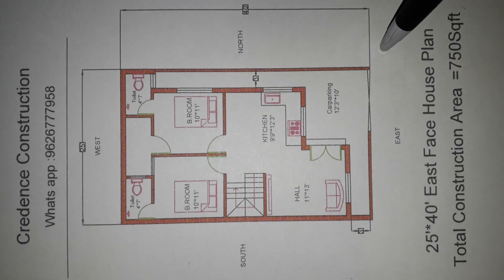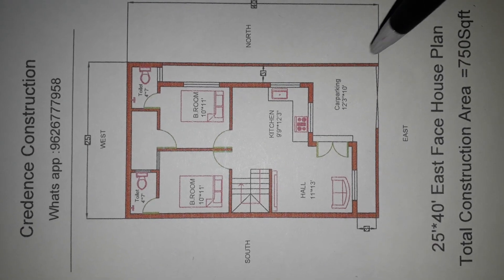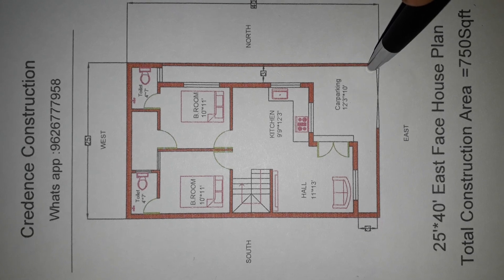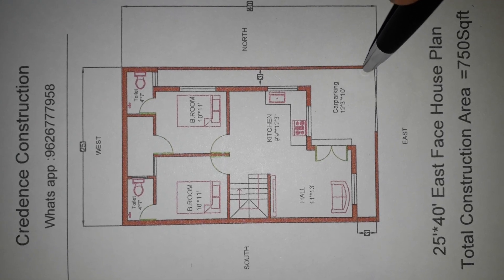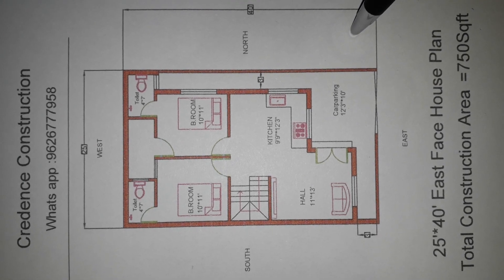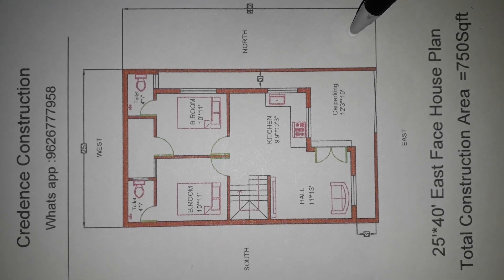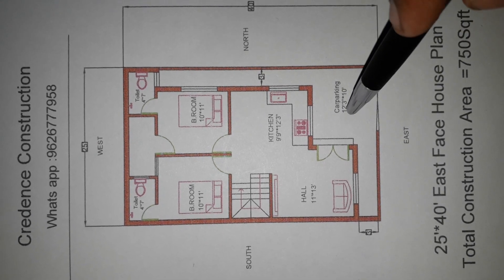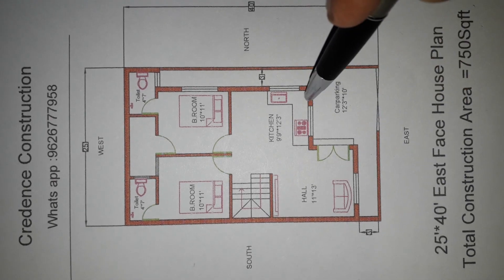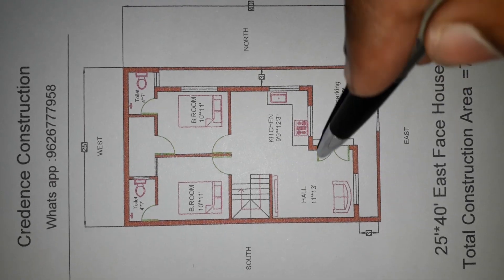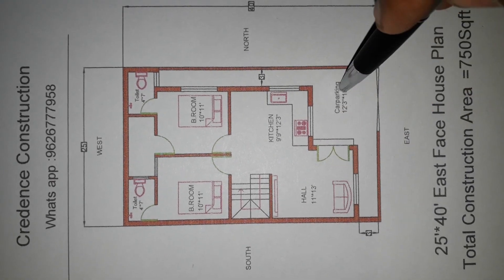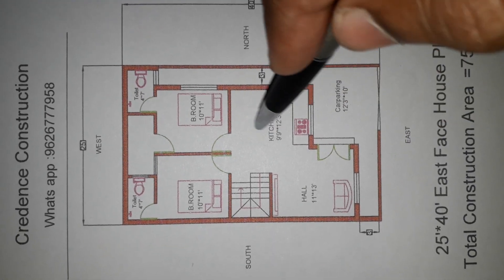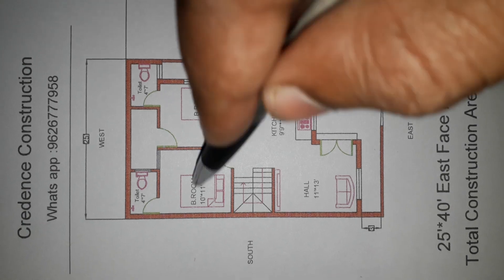We will talk about the materials and construction details. In this plan, we will talk about the hall, kitchen, master bedroom, and second bedroom.